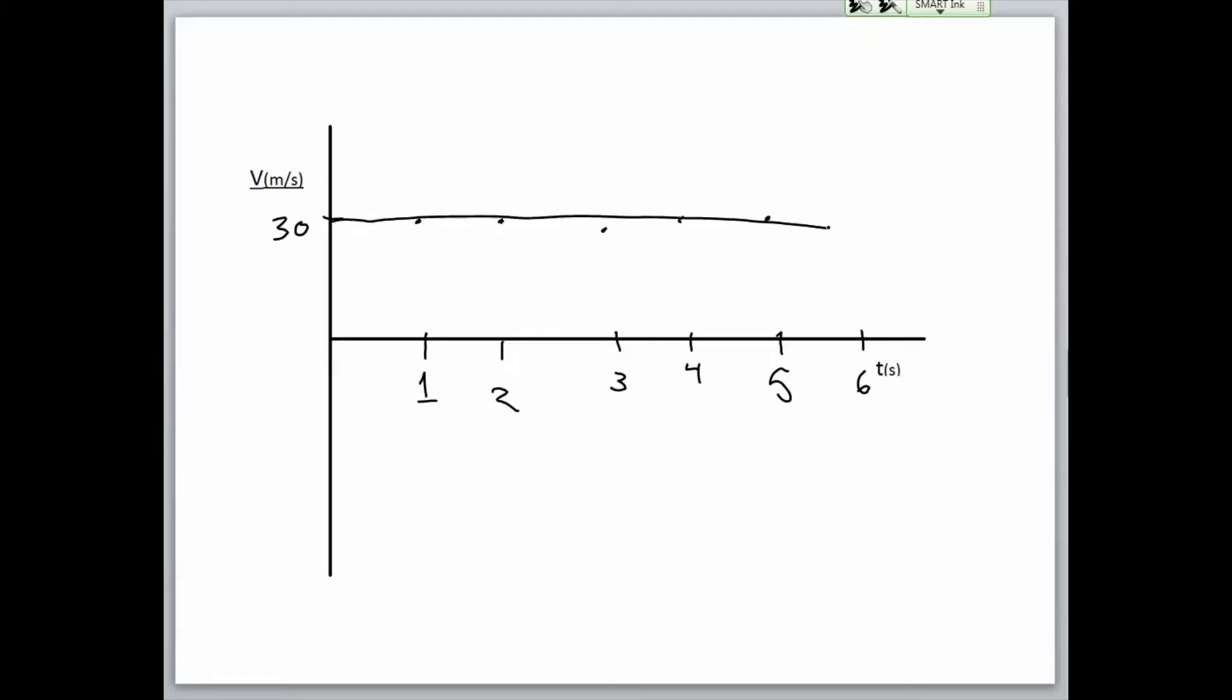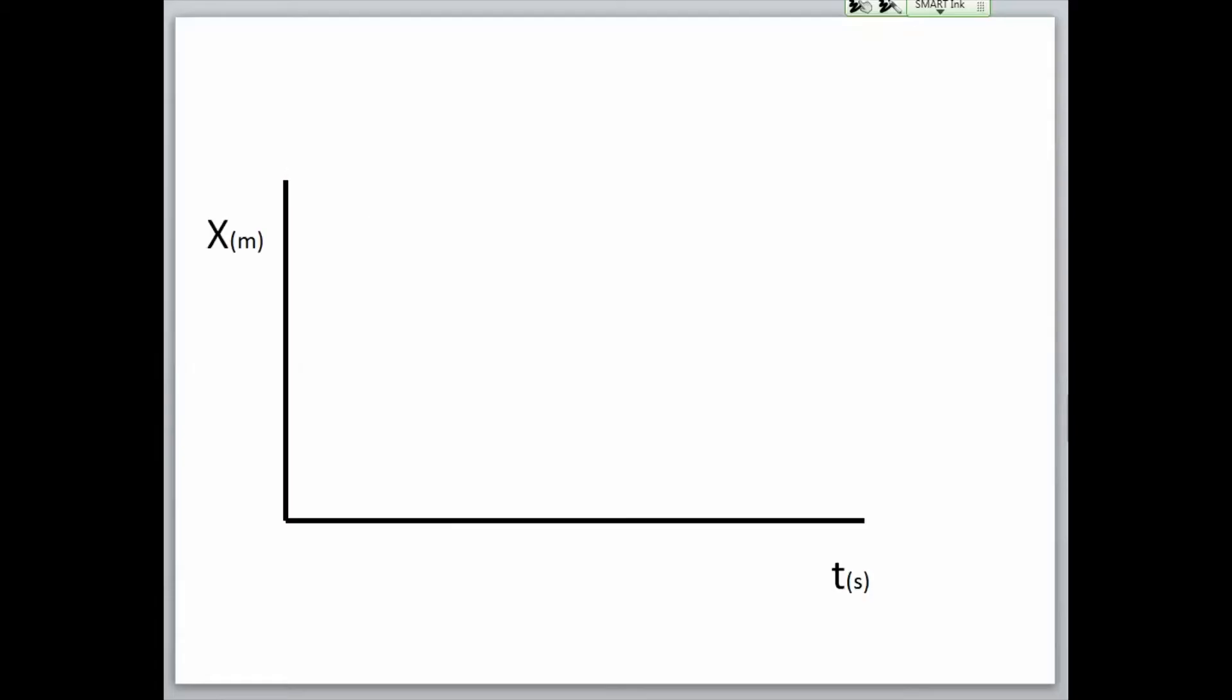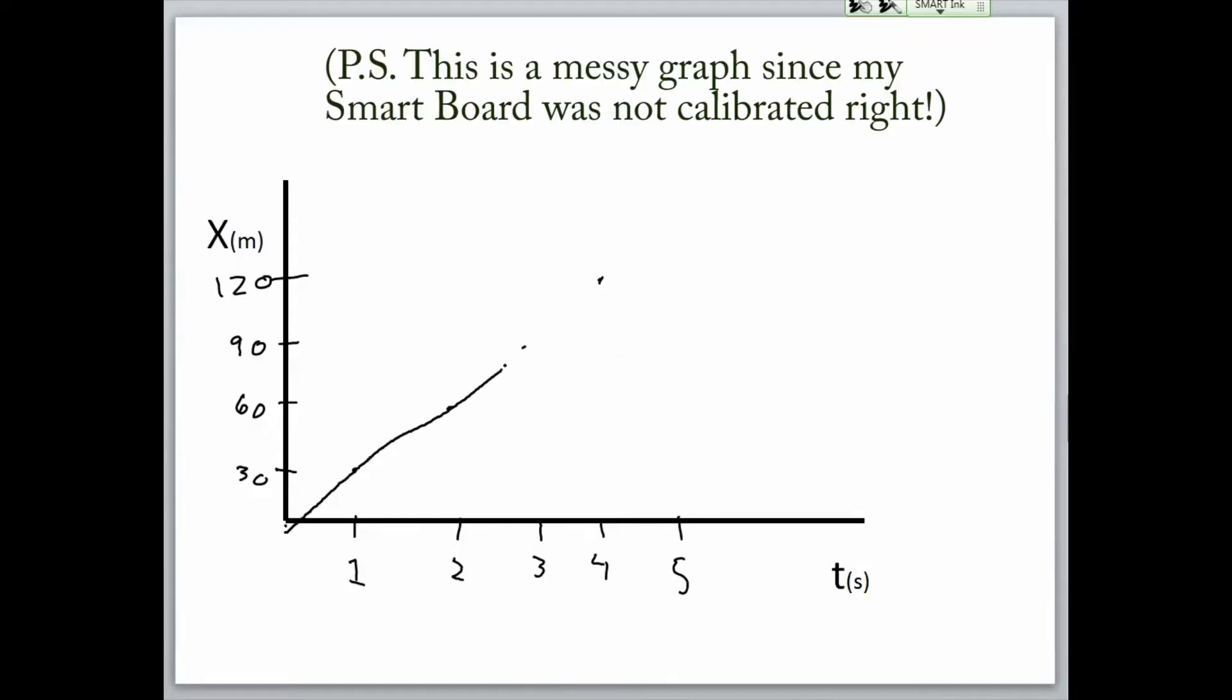What would the same motion look like for a position graph? Assuming we start our timer at the zero position of the car, it is traveling at 30 meters per second. So the slope of our position graph is 30. Remember that slope of position is velocity. So we go up 30 meters per second and over by 1 second. For the next second, we go up another 30 meters, then over 1 second, etc. So this would be the position graph for the car traveling on the highway at 30 meters per second.